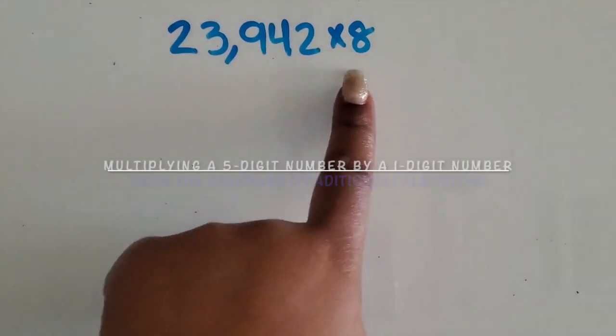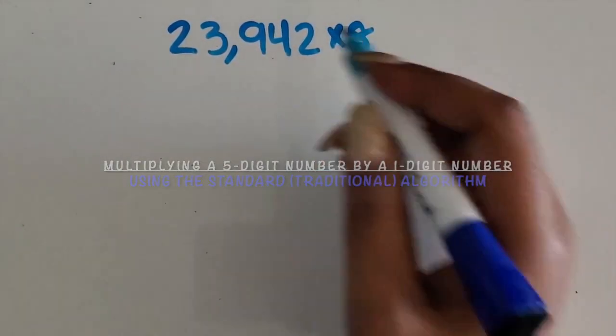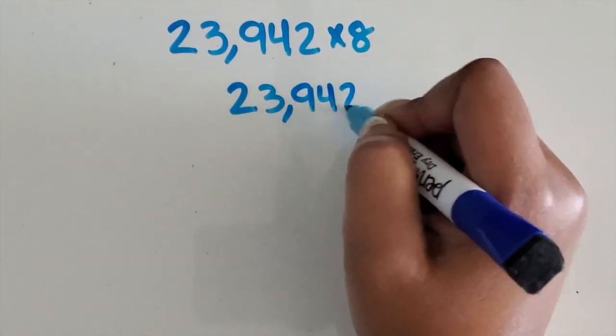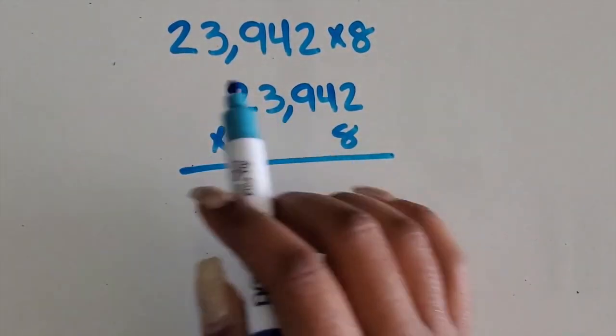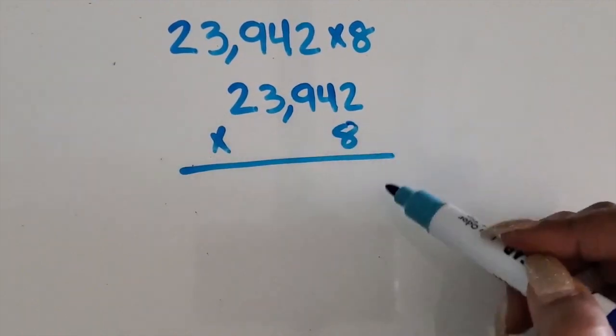We're going to multiply a five-digit number by a one-digit number using the standard or traditional algorithm. Have students line up their numbers vertically. They can start in the ten thousands place or the ones place, whatever they're comfortable with.